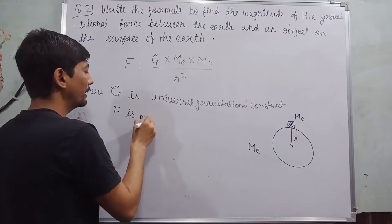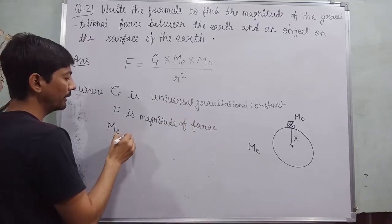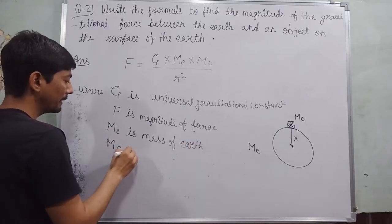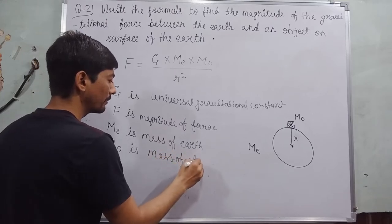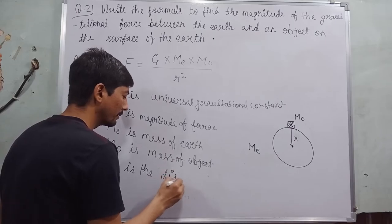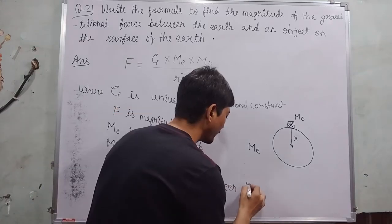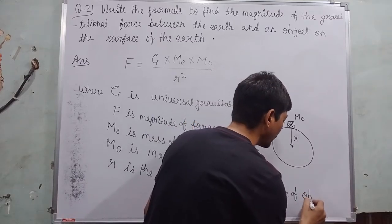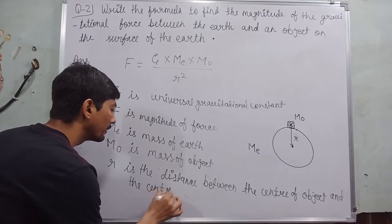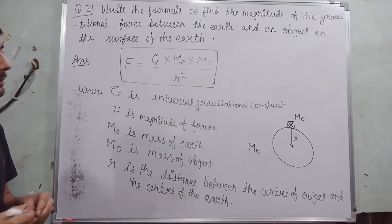F is the magnitude of force. Me is the mass of Earth. R is the distance between the center of the object and the center of the Earth.